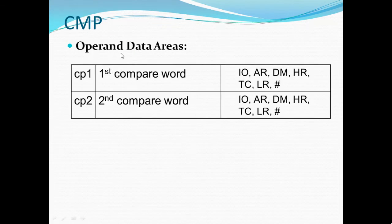Operating data areas: CP1 first compare word - IO, AR, DM, HR, TC, LR and direct compare value. CP2 second compare word - IO, AR, DM, HR, TC, LR and direct compare values.